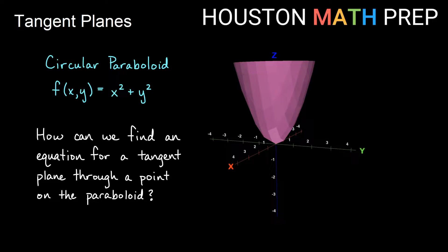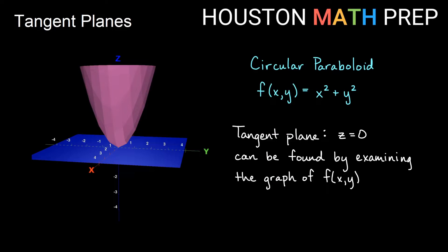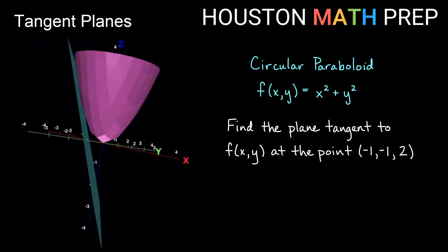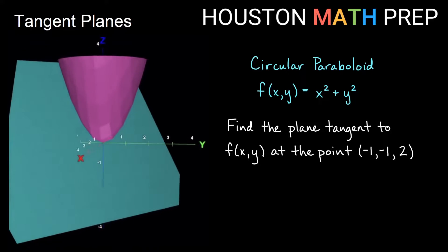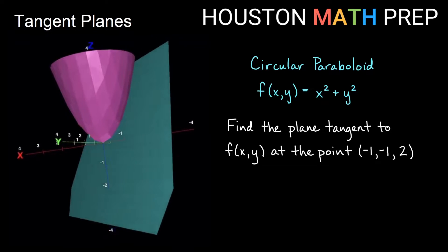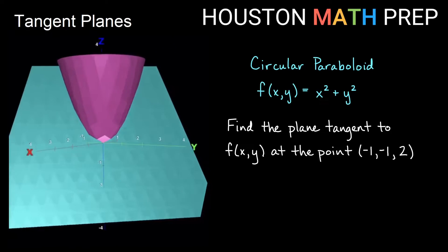Sometimes in some functions you're going to have characteristics that are so basic you'll just be able to tell by looking at it. For example, if we were trying to take a plane that is tangent to the very bottom point on my parabola here that goes through the origin, then we could probably tell that the plane is just the xy plane — in other words, z equals zero. Let's say we want to find a plane tangent to our circular paraboloid at a different point, like negative one, negative one, positive two. We want to find the equation of this tangent plane.